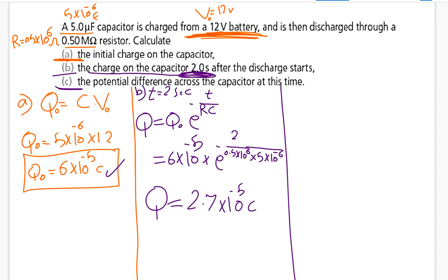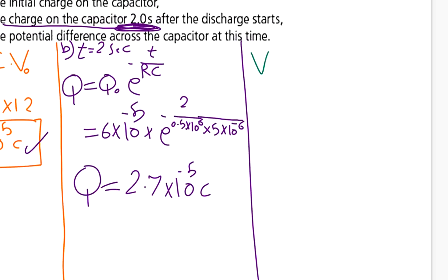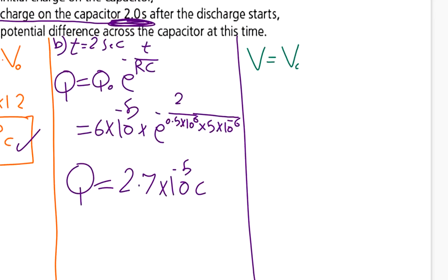I can use this formula: V equals V₀ e to the power negative t over RC. When I substitute, I will put t, which is 2, over RC. This formula is for the voltage, the same as the charge formula but for voltage. I have the V₀ which is 12.